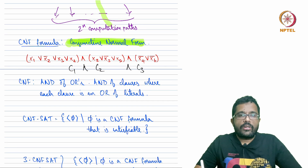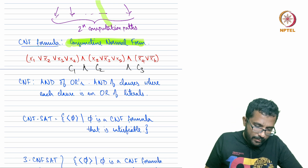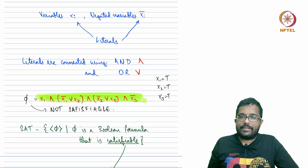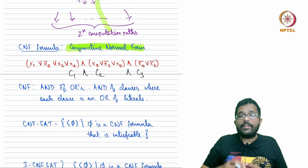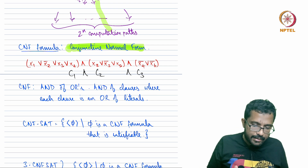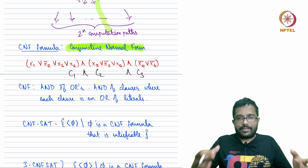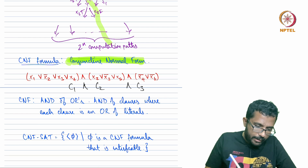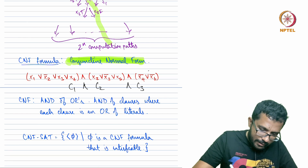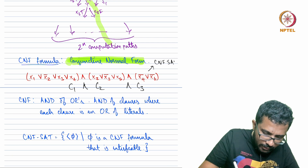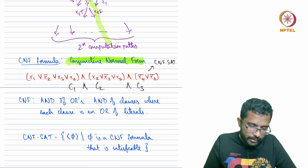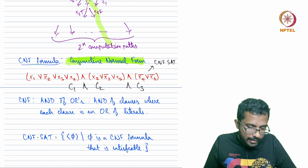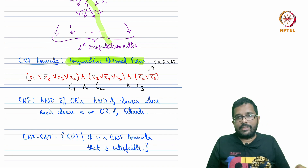We can define a language called CNFSAT: given a formula in CNF, is it satisfiable? This is like SAT but the formula is constrained to CNF form. The formula psi above is in CNFSAT — it is satisfiable by setting x1 to true (satisfying clause 1), x2 to true (satisfying clause 2), and x4 to false (satisfying clause 3).